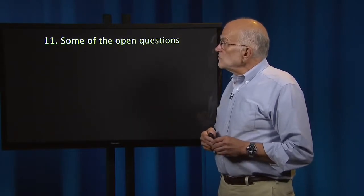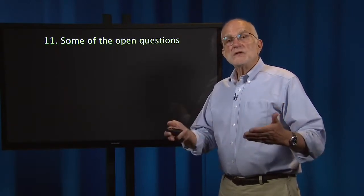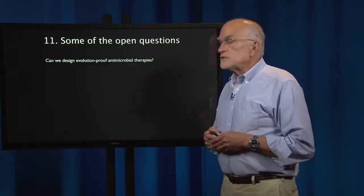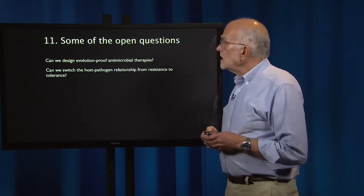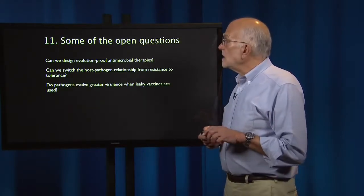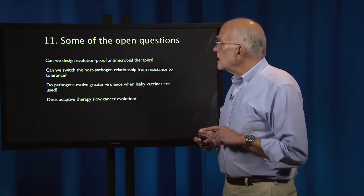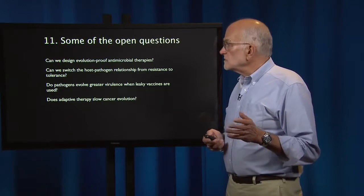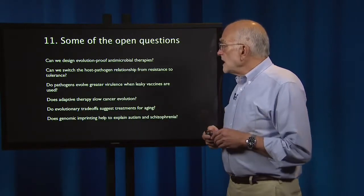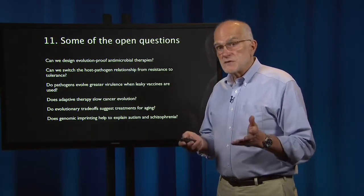Finally, we close the book with some of the open questions, because any searching analysis reveals many places where we need to know more. Can we design evolution-proof antibiotic therapies? Can we switch the host-pathogen relationship from resistance to tolerance? Do pathogens evolve greater virulence when leaky vaccines are used? Does adaptive therapy slow down cancer evolution? Do evolutionary trade-offs suggest treatments for aging? And does genomic imprinting help to explain autism and schizophrenia?